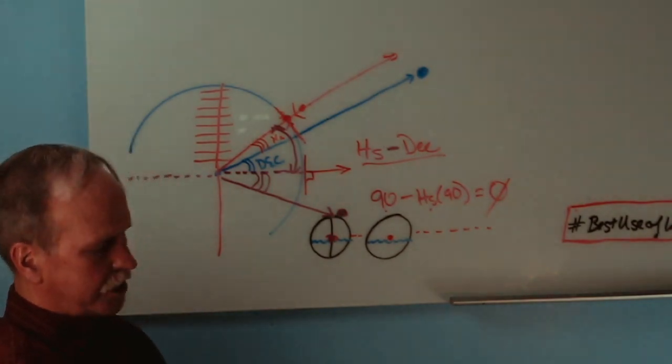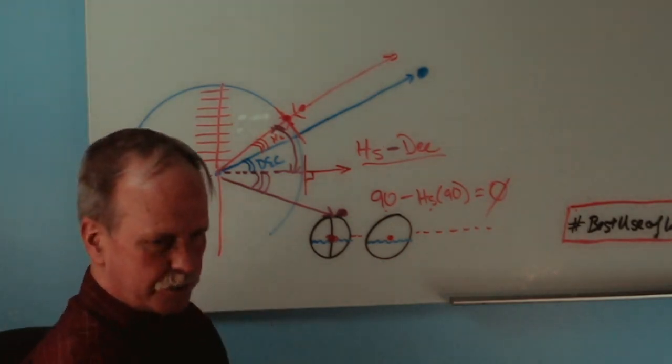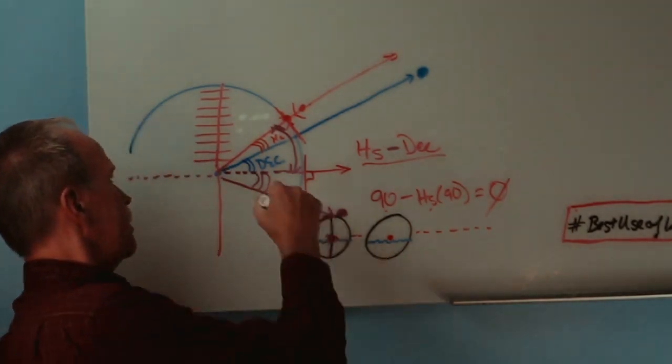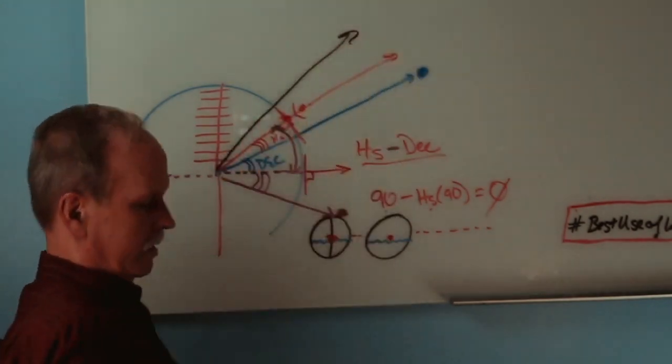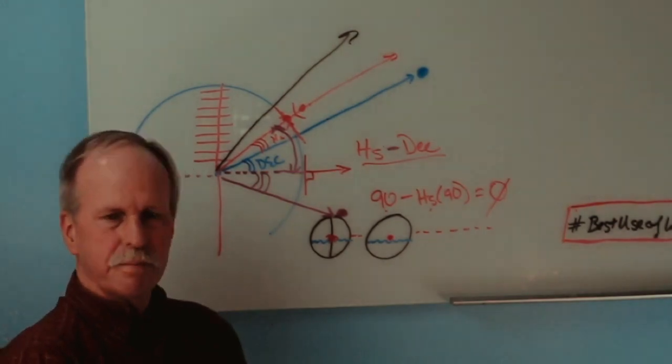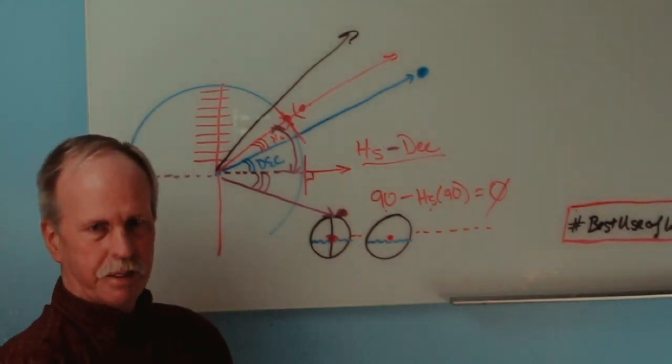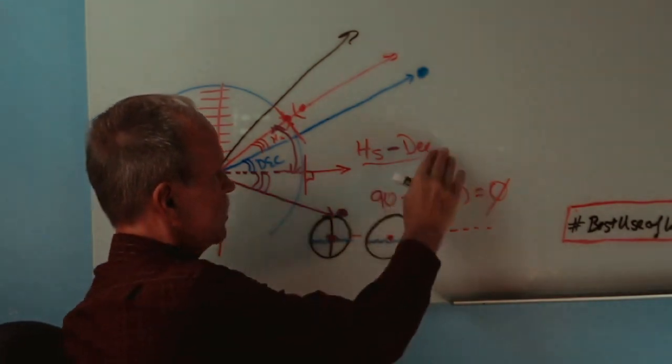The other one is, what about those situations where you're down in the tropics and the Sun, the declination of the Sun is actually further away from the equator than you are?